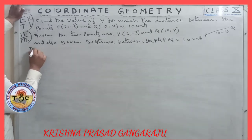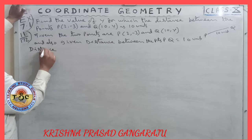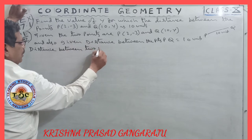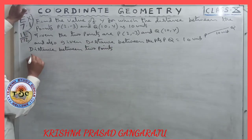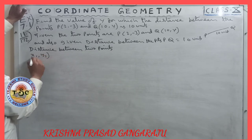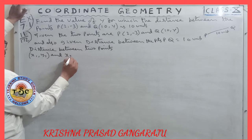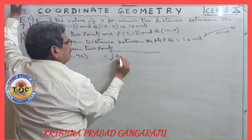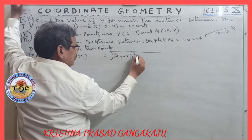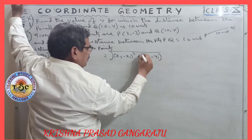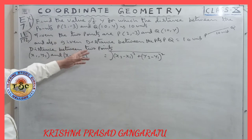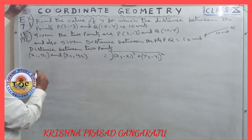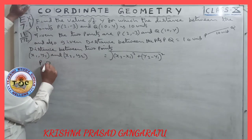Distance formula: the distance between two points (x1, y1) and (x2, y2) is equal to the square root of (x2 minus x1) whole square plus (y2 minus y1) whole square. Distance between P and Q is equal to 10.